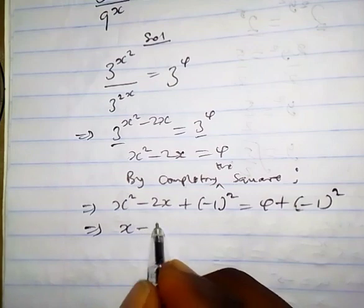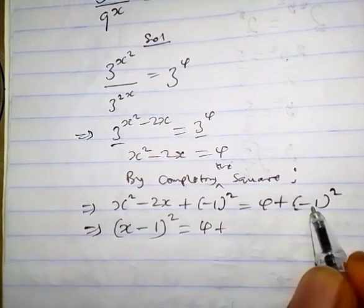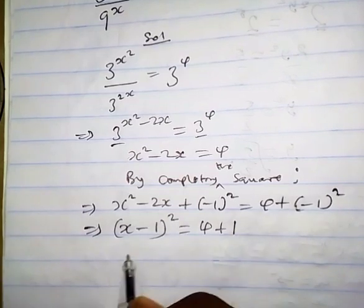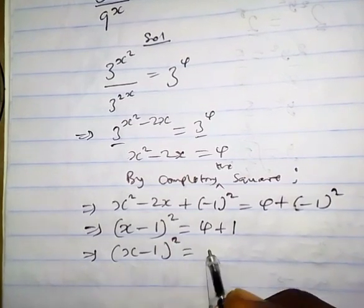So we have s minus 1 all squared equals 4 plus minus 1 all squared that is 1, which implies s minus 1 all squared equals 5.